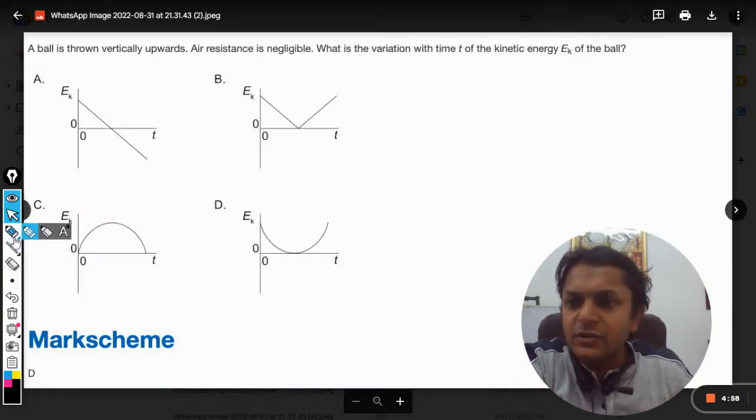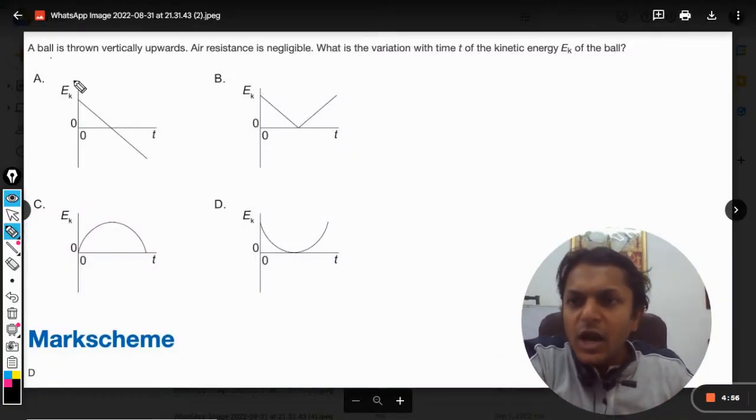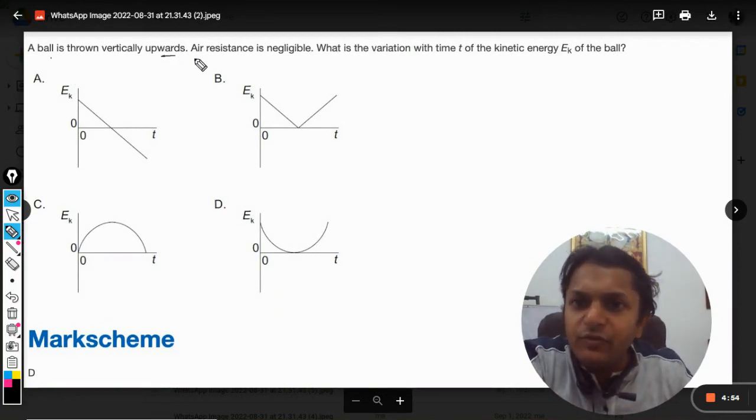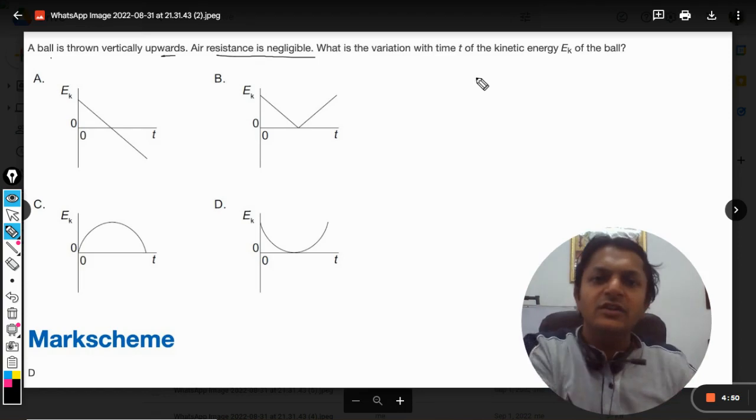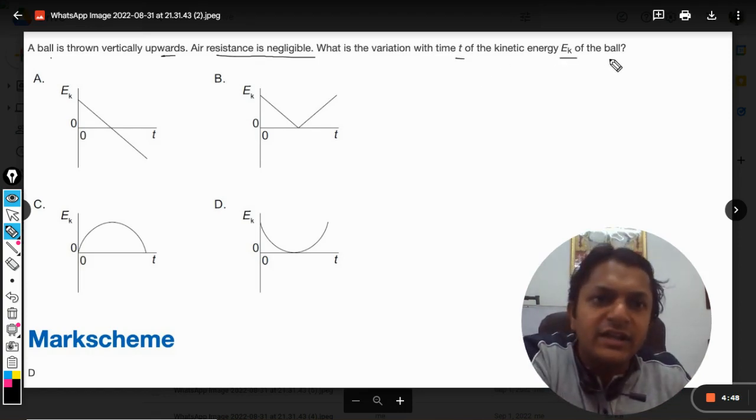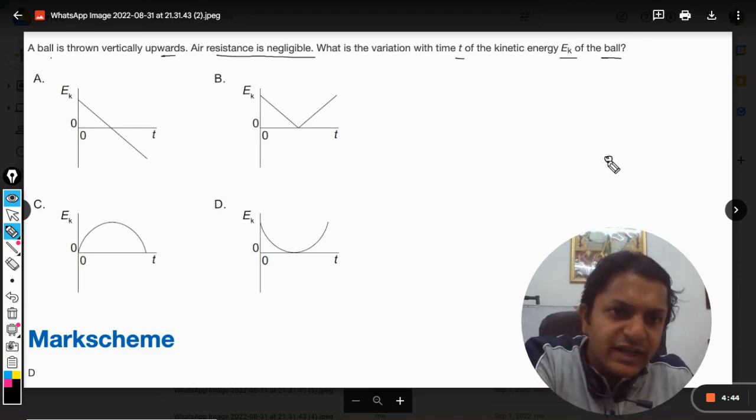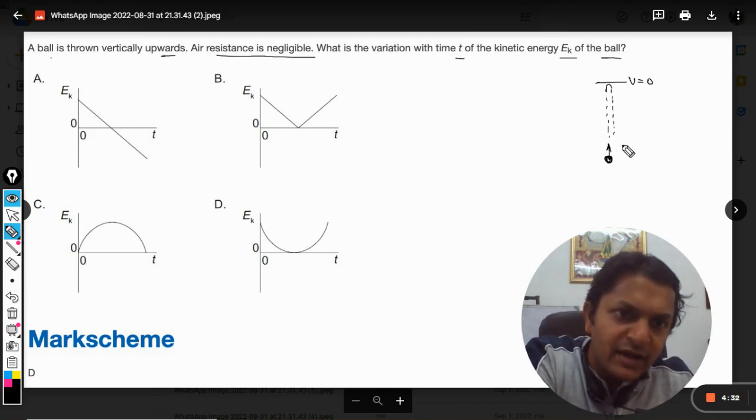Okay, so this is another question. Let us see: a ball is thrown vertically upwards, air resistance is negligible. What is the variation with the time t of the kinetic energy Ek of the ball? The question says that there is a ball and it is thrown upwards, so it will go up with a certain velocity. After some certain time the velocity will become zero and then it will start falling back again downwards.